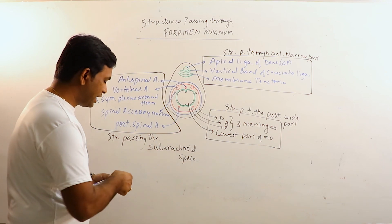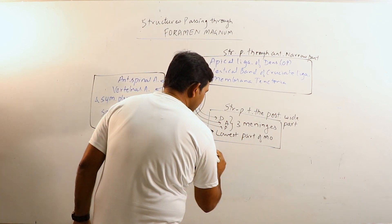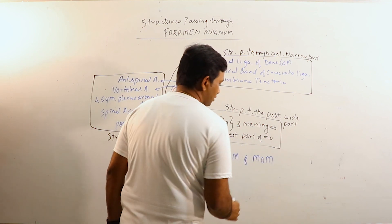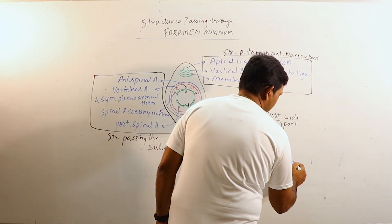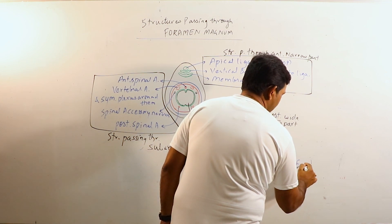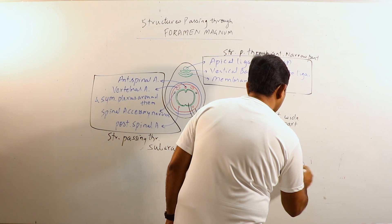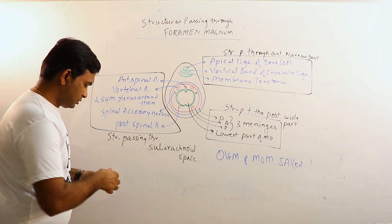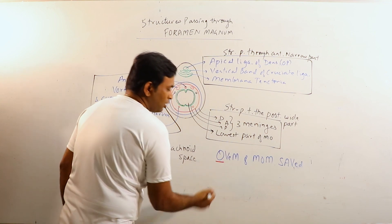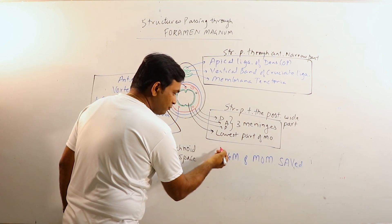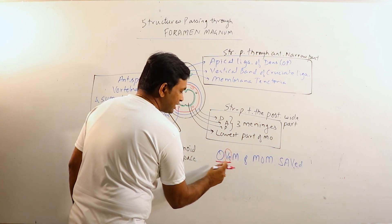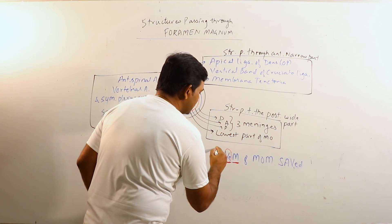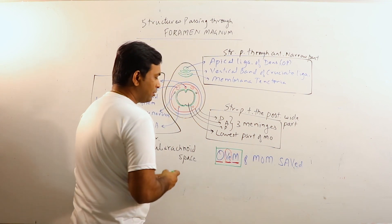We can learn this by a mnemonic. The structures through the narrow anterior part are: the Odontoid Process or Dens, the apical ligament of the Odontoid process or Dens, the vertical band of Cruciate Ligament, and Membrana Tectoria.